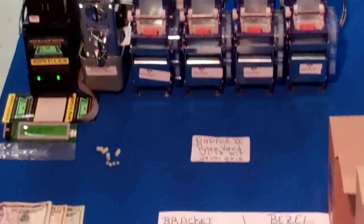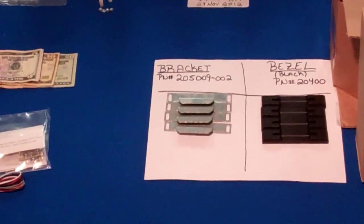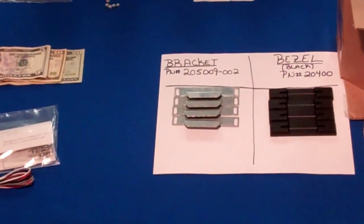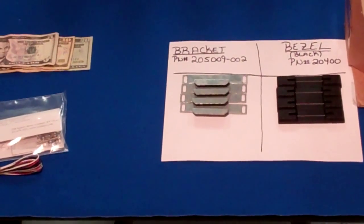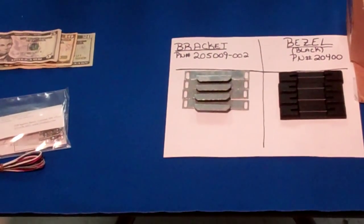In the video you'll see in the front, the pieces of the kit. We have black bezels, orange green, and brackets for mounting the dispenser.